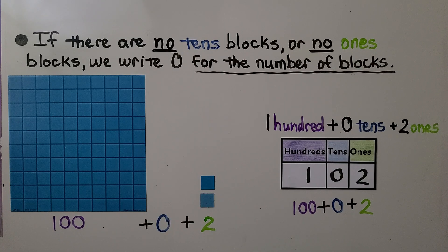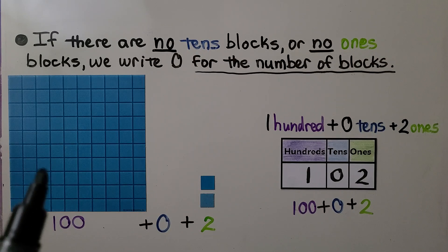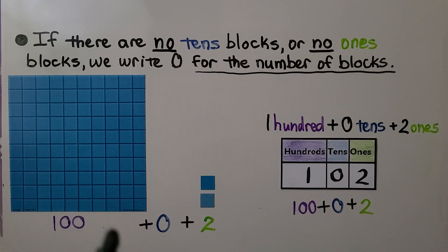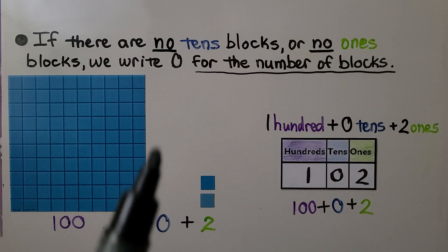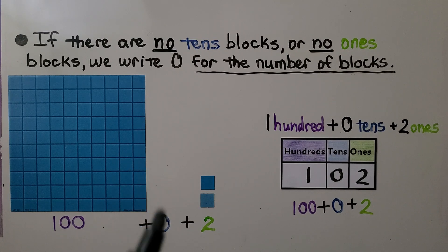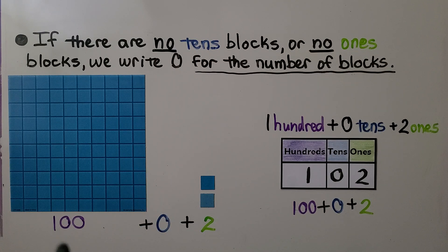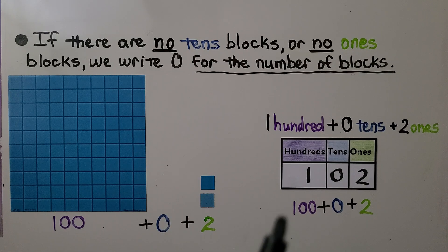If there are no tens blocks or no ones blocks, we write zero for the number of blocks. Here we have a hundreds flat, no lines of ten, and two little ones — so we have 100 plus 0 plus 2. That's 102.